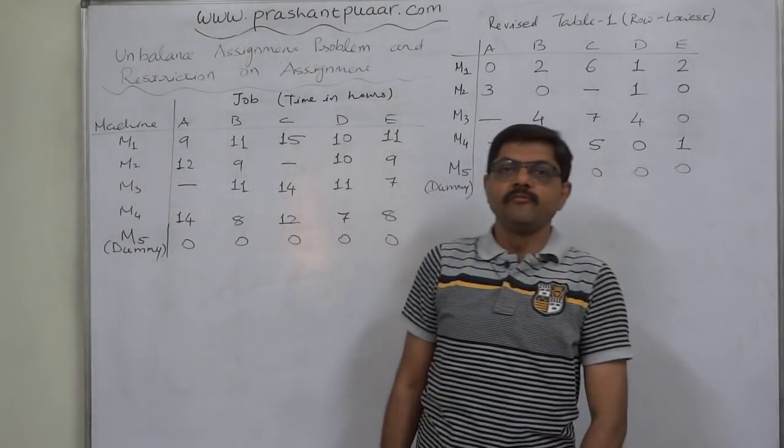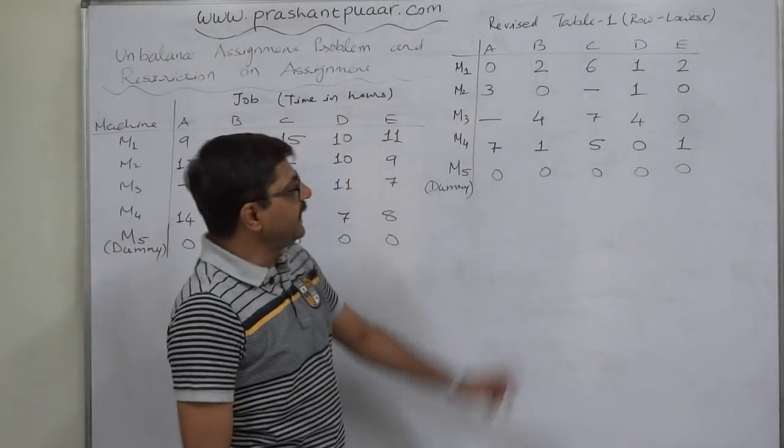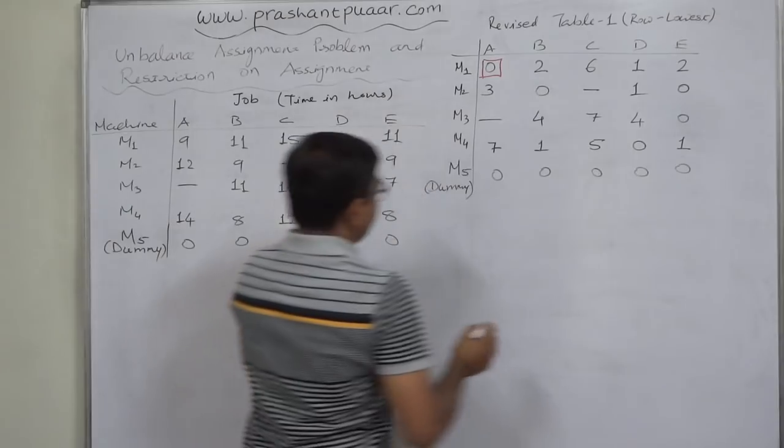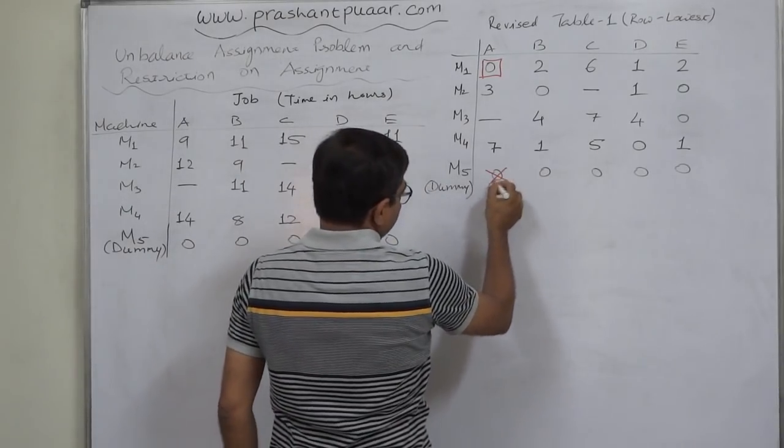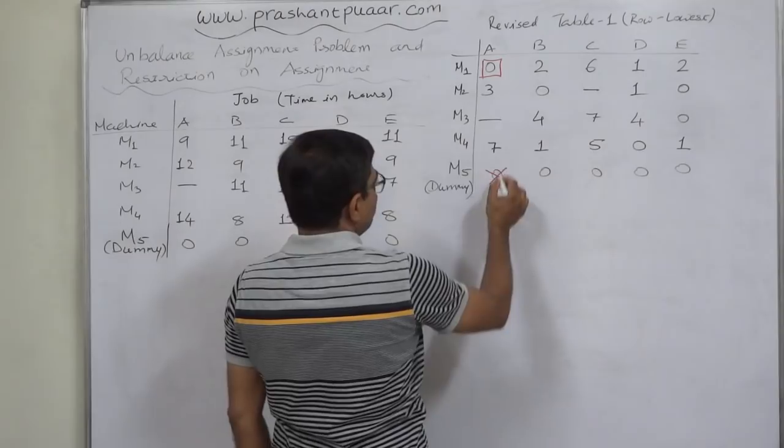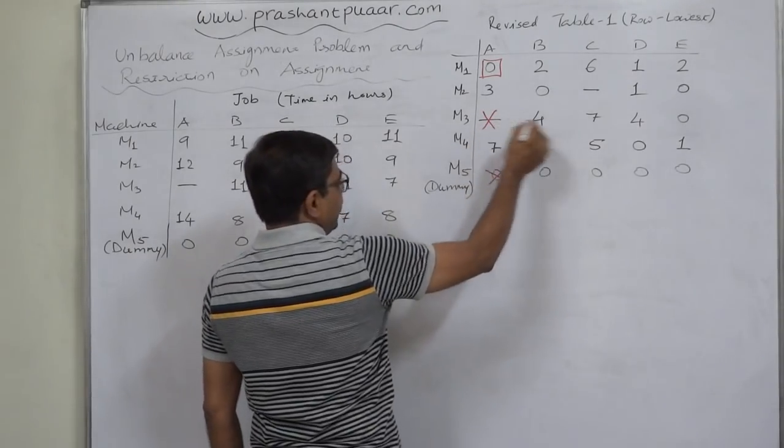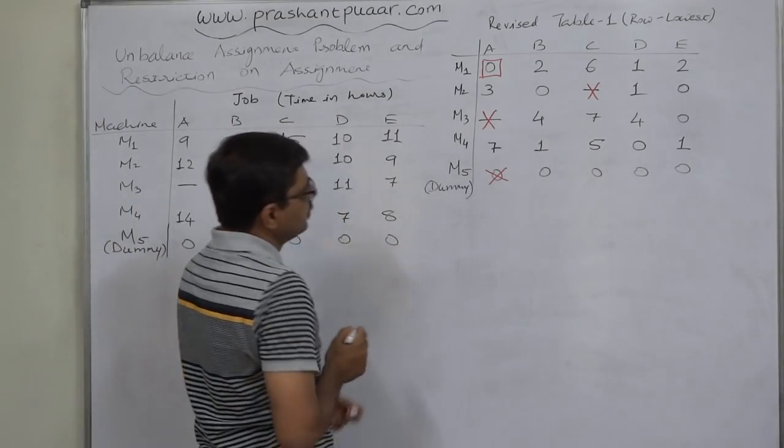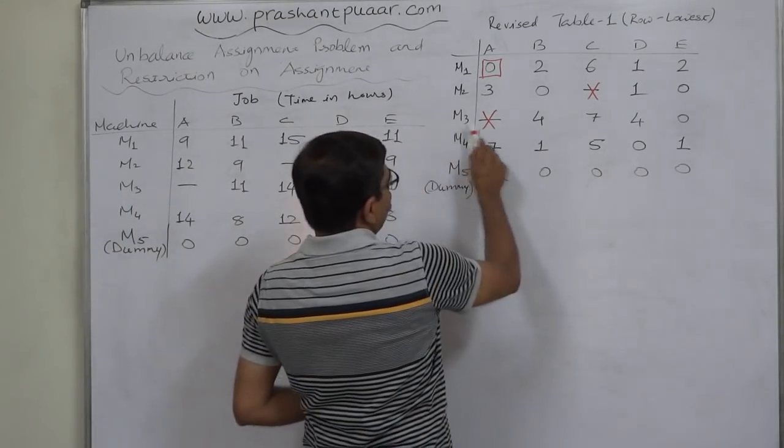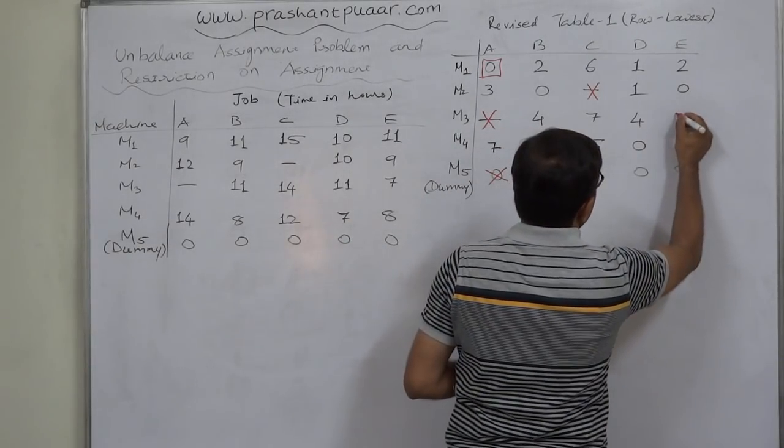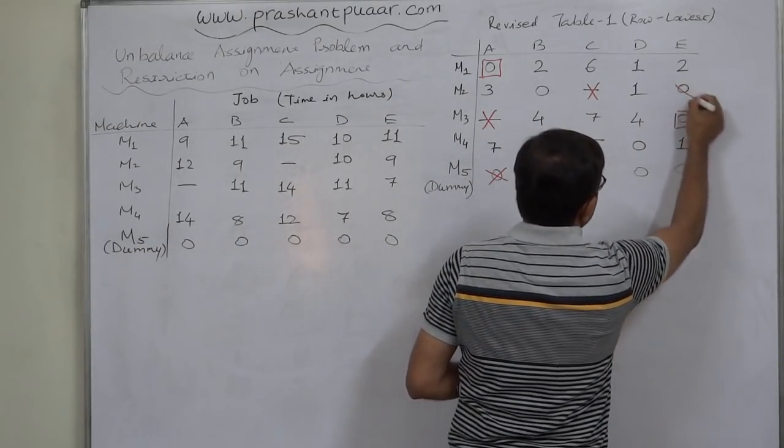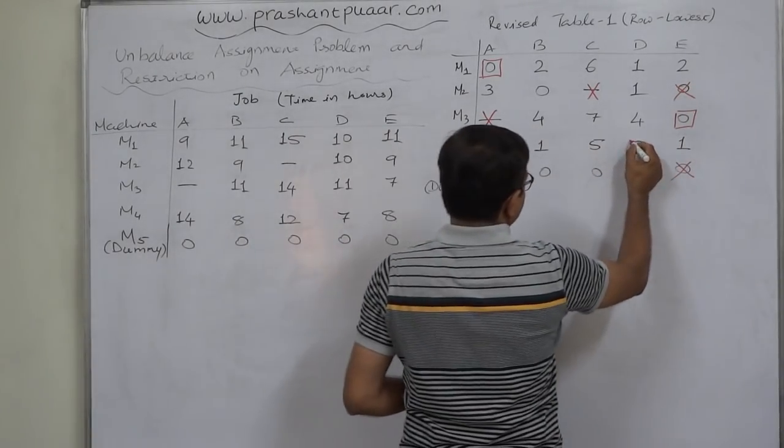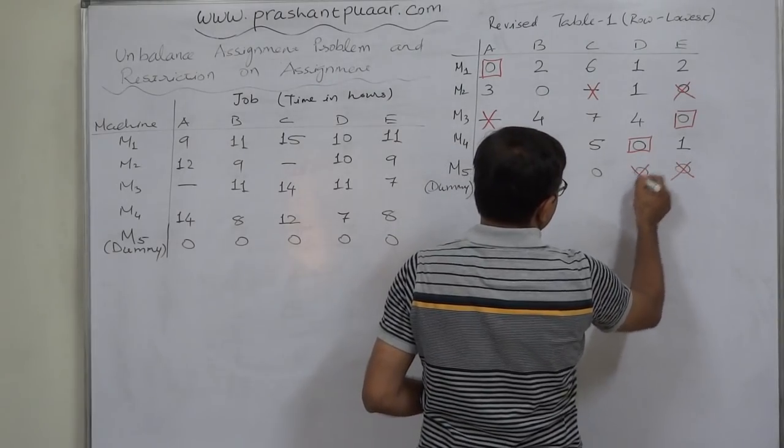And the first step of making assignment is find out the row with single zero. The first row itself is with single zero. Cancel all other zeros in the same column. We are not going to make any assignment at these two places because this is the case with restrictions. Row M3 is also with single zero.